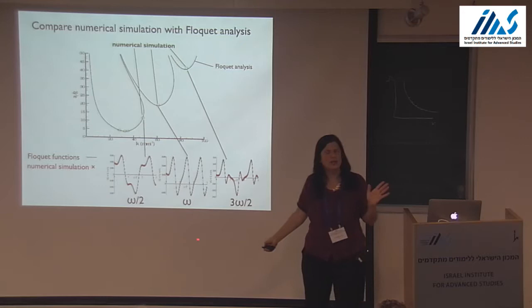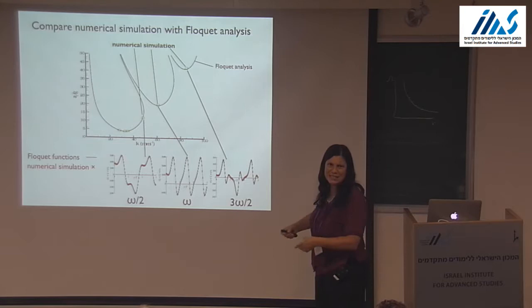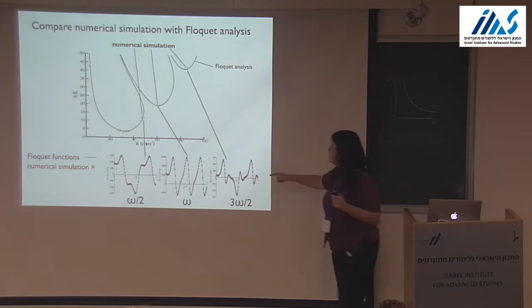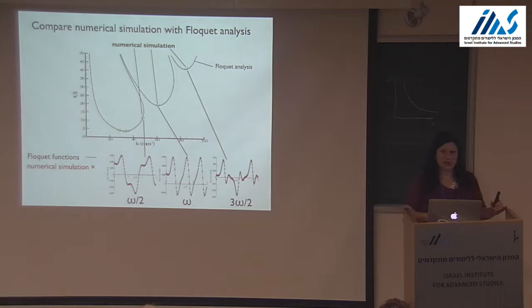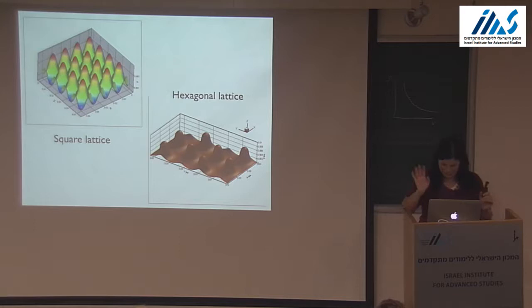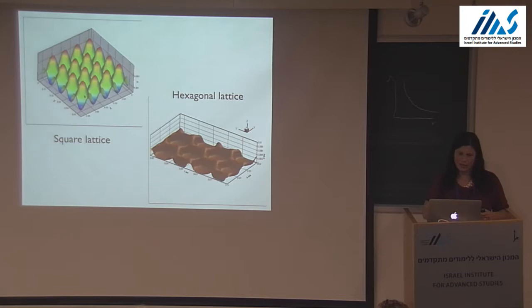One doesn't often look at Floquet functions. This is the omega-over-two tongue and the three-omega-over-two tongue — the response in these different tongues. Here are the two patterns observed: squares, and here is a hexagonal lattice.